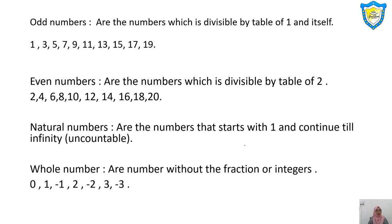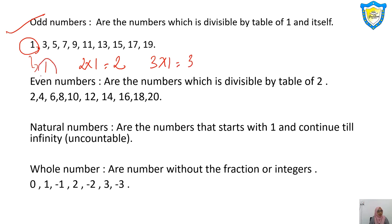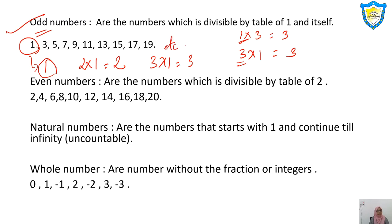Next is odd numbers, even numbers, natural numbers, and whole numbers. What do you mean by odd numbers? Odd numbers are numbers which are divisible by 1 and by themselves only. For example, 1 comes in the table of 1 only; 3 comes in the table of 1 and table of 3. The number which is divisible by 1 and itself is known as an odd number. So the odd numbers are 1, 3, 5, 7, 9, 11, 13, 15, 17, 19, and so on.